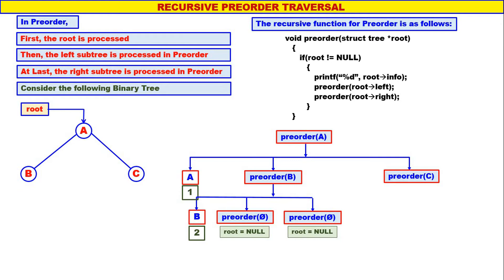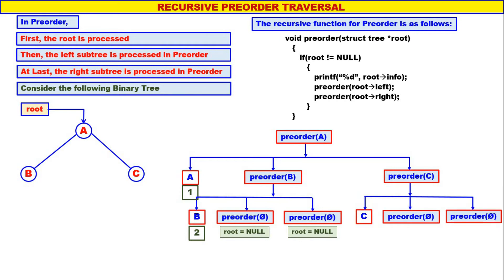Next, we go to pre-order of C. C is not equal to null, therefore display C. Left of C is null, therefore pre-order of null. Right of C is null, therefore pre-order of null. C is the third one to be displayed. Pre-order of null: root is null, nothing happens.